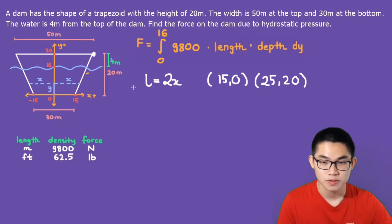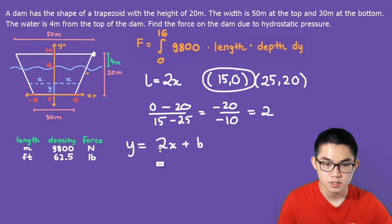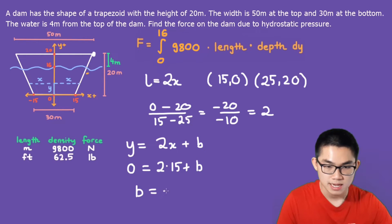Let's calculate the slope. We get 0 minus 20 over 15 minus 25. That's going to give us negative 20 over negative 10, which is going to be 2. And using the linear formula, we have the slope 2x plus b. And we have to substitute one of these two points. Let's substitute this one. So the y is 0, the x is 15. So 2 times 15 plus b. b is going to be negative 30.